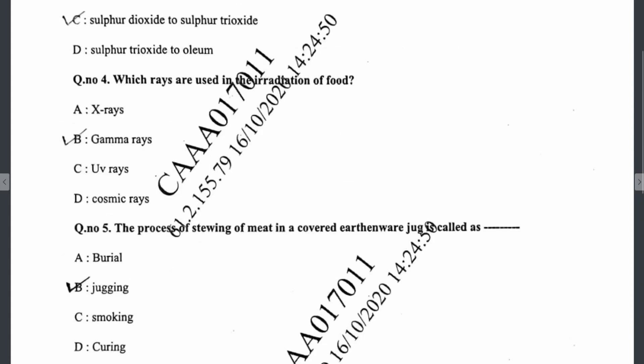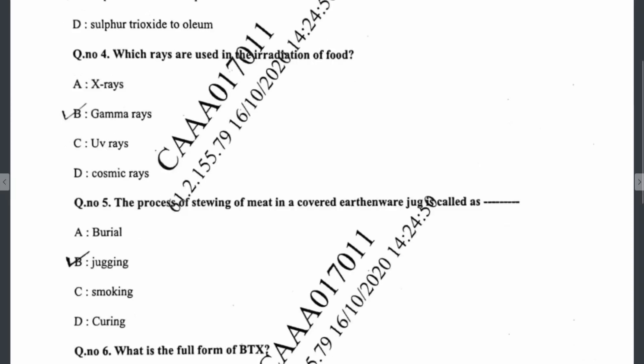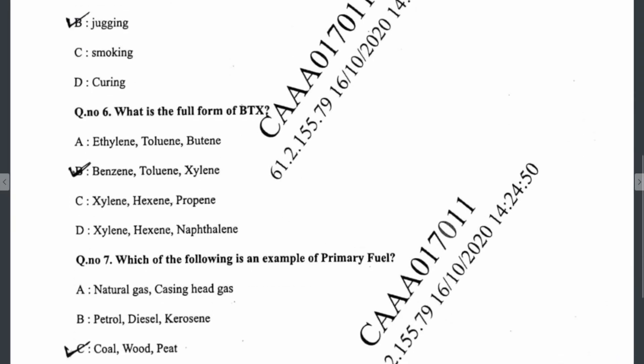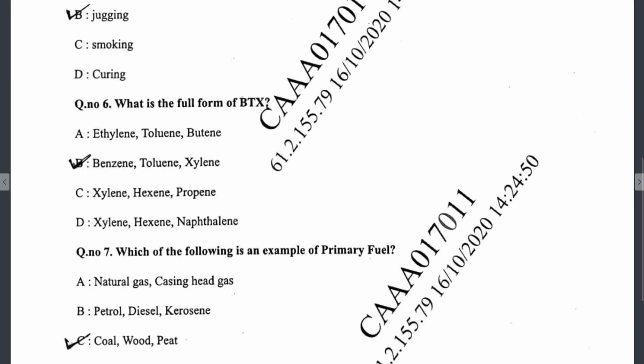Question four: gamma rays are used in the irradiation of food. Question five: cooking meat in an earthenware jug is called the jugging process. Question six: the full form of BTX is benzene, toluene, and xylene — these three compounds constitute BTX.